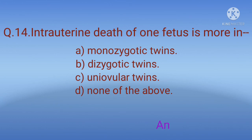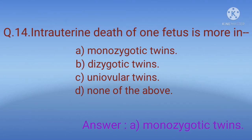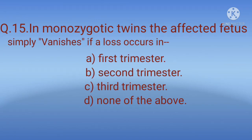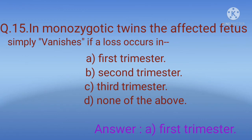Question 15: In monozygotic twins, the affected fetus simply vanishes if a loss occurs in? Options: A) First trimester, B) Second trimester, C) Third trimester, D) None of the above. The correct option is A, first trimester. However, if the death of one fetus occurs in the second trimester, a fetus papyraceus or compressus may form. In the first trimester, the fetus simply vanishes.